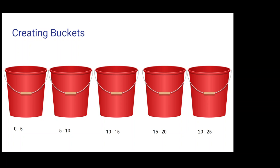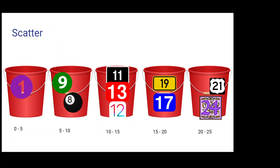From here, we have the buckets. We're going to scatter the elements into their respective buckets. So 1 goes into the first bucket, 9 and 8 go into the second bucket, 11, 13, and 12 go into the third bucket, and so on.